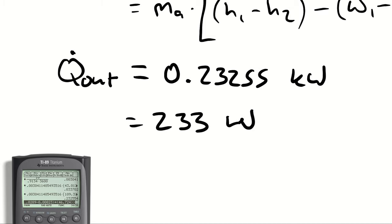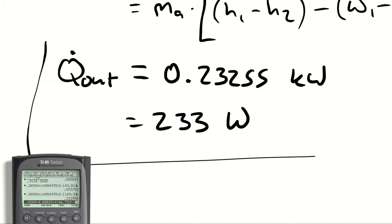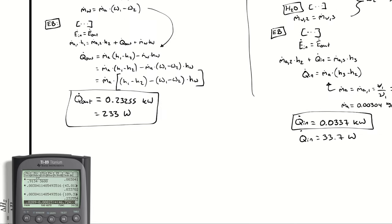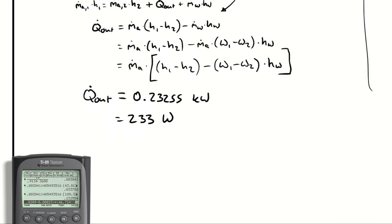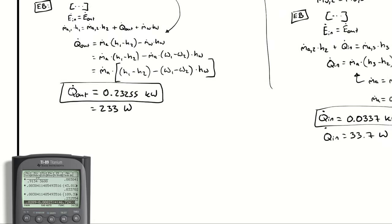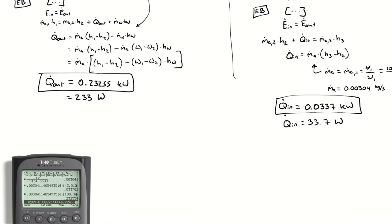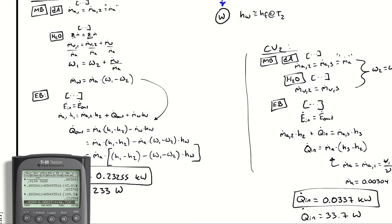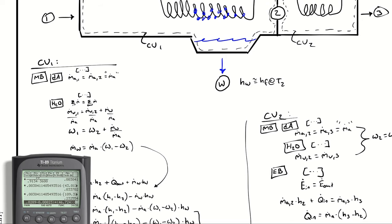Q̇_out is approximately 233 watts. So the operator of this HVAC system would need to pay for the electricity to run a heat pump supplying about 33.7 W of reheat, in addition to the refrigeration system providing 233 W of cooling. For small reheating processes like this, an electric resistance heater is common since it provides a precise, convenient amount of heat.